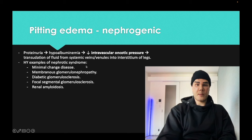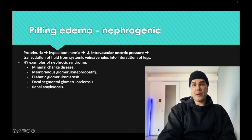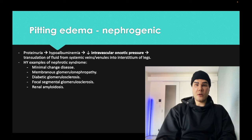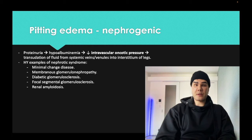Membranous glomerulonephropathy has many etiologies and can be primary. Antibodies against phospholipase A2 receptor, solid tumors such as pancreatic and breast cancer, autoimmune diseases like rheumatoid arthritis, and drugs including dapsone, gold salts, and sulfonamides can all cause membranous glomerulonephropathy.